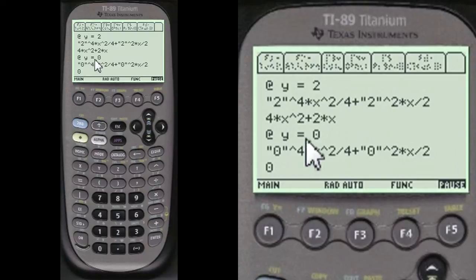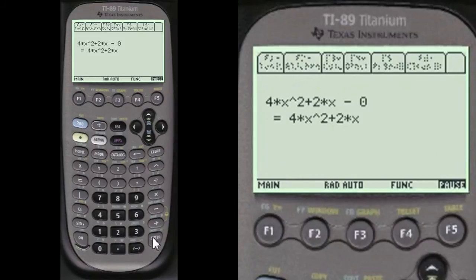And then y equals 0. Then here's the zeros in for y. And that equals 0. And 4x squared plus 2x minus the upper limit minus the lower limit is 4x squared plus 2 times x.